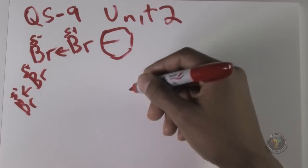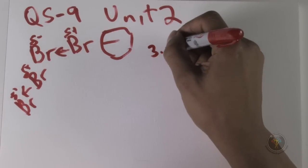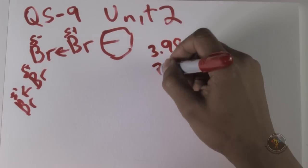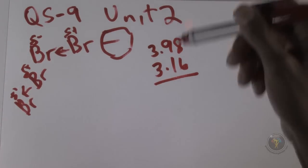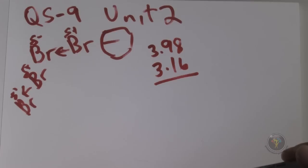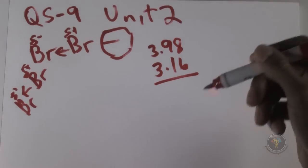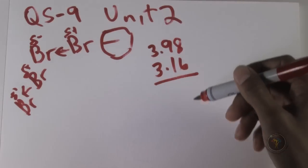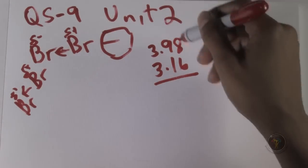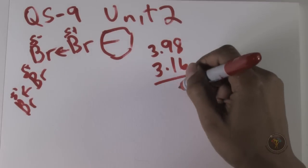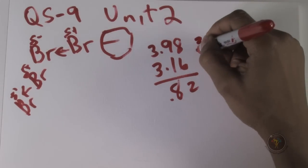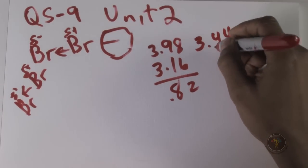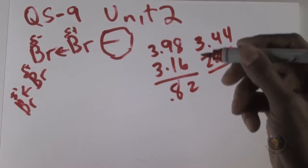For A, chlorine and fluorine: we have 3.98 and 3.16. Note that the table puts them in reverse order so you have to make that extra step — the difference is 0.82. For B, sulfur and oxygen: 3.44 and 2.58. I add 0.14 to 3.44 to get to a round number, meaning I subtract 0.14 from 1, giving 0.86.